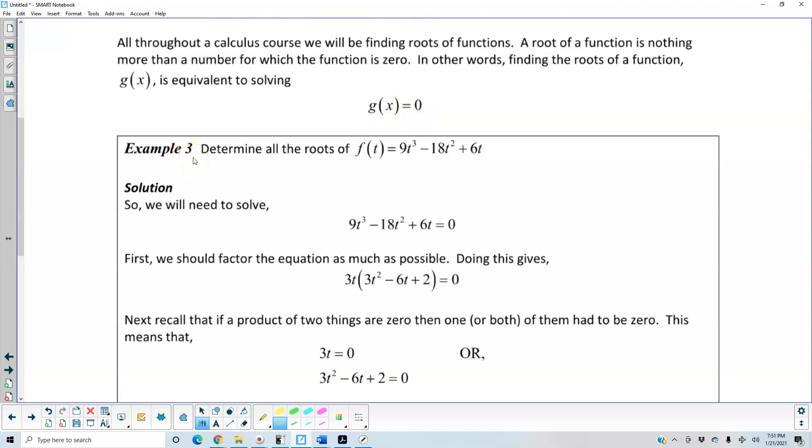So for example 3, we're going to determine all the roots of f(t) which is equal to 9t³ - 18t² + 6t. So the solution, we will need to solve this equation. We have 9t³ - 18t² + 6t and then we're going to set that equal to zero.